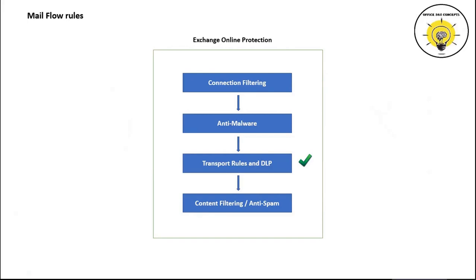With the help of mail flow rules we can control email routing within our organization, we can block certain senders, we can block emails, or we can add a disclaimer in all incoming and outgoing emails. In Exchange Online Protection, mail flow rules scan emails post anti-malware and before anti-spam checks. A mail flow rule processes an email before it reaches a user mailbox, whereas an inbox rule will process an email when it reaches the mailbox.